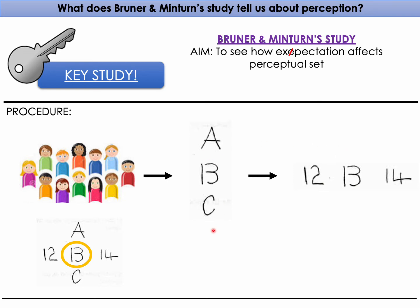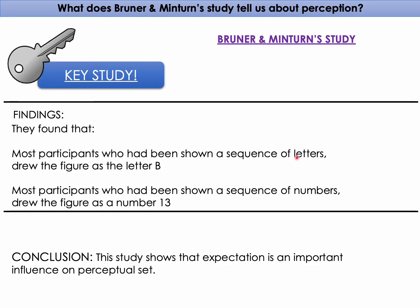The findings were that the group shown the letter sequence were more likely to draw the ambiguous figure as the letter B, while the group shown the number sequence were more likely to draw it as the number 13. Most participants who saw letters drew B; most who saw numbers drew 13. The conclusion is that expectation is an important influence on perceptual set, because participants expected to see a number or a letter depending on which group they were in.